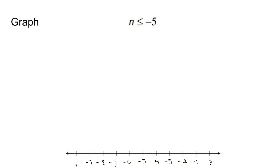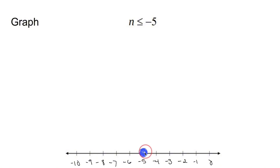Every number line is different. Now, 'less than or equal to' means you are allowed to include negative 5. For example, negative 5 is less than or equal to negative 5. So what you do is you go to that negative 5, draw a circle, and fill it in. Why fill it in? Because if you're including negative 5 — if negative 5 is going to be equal to n — you're going to fill it in.